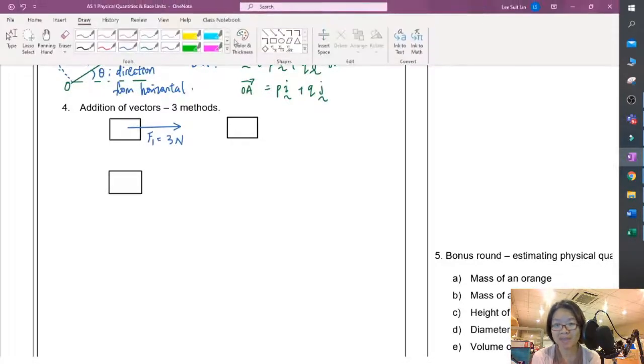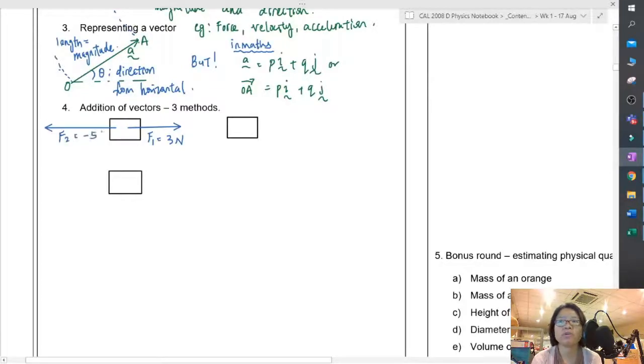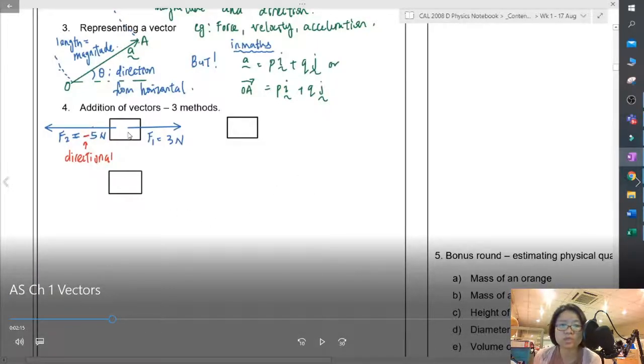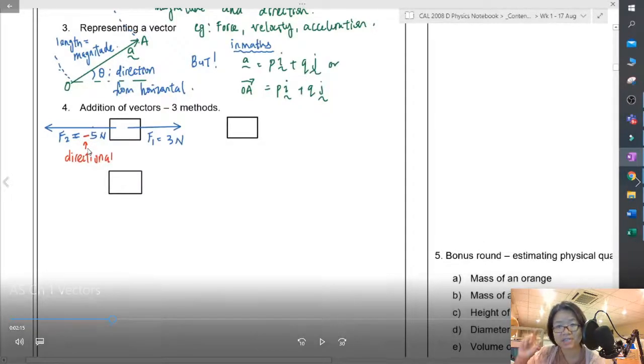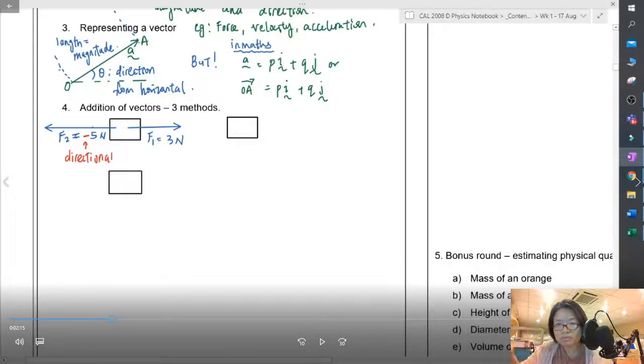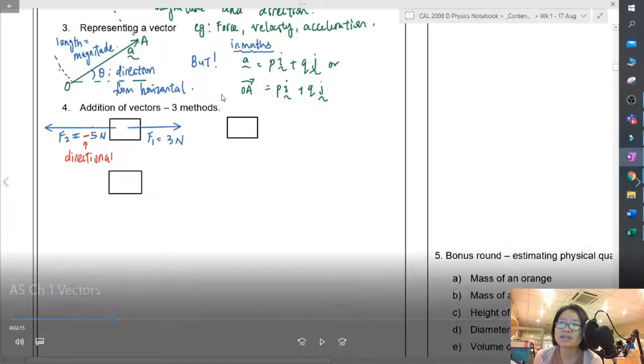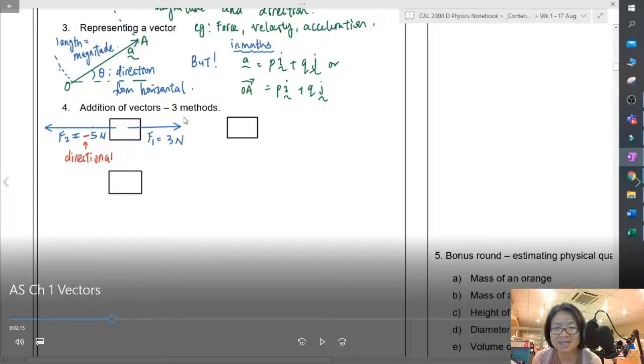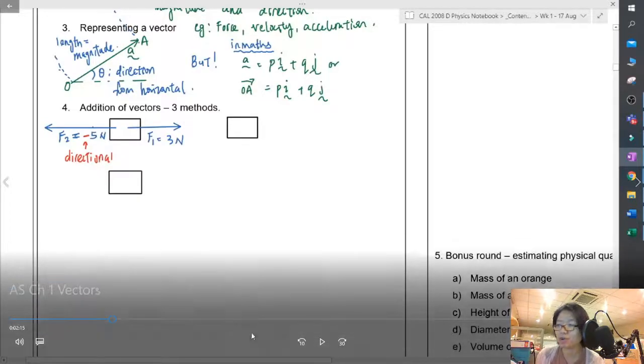We're going to look at how we are going to add vectors. Let's talk about the simple one first. Let's say you have a box and you pull 3 N to the right and you pull 5 N to the left. You notice that because the 5 N and the 3 N is opposite direction, then this 5 must have a negative. In physics, the negative is directional. You have to understand whenever we write a negative in physics, it means something.